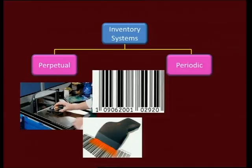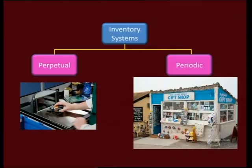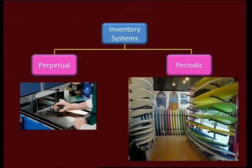The opposite is the periodic system. Think of someone selling mangoes — he doesn't have a scanner. He knows his stock because he can count it: what he started with, plus what he purchased, minus what's left over equals what he sold. It's more informal, often for a business where the owner runs it and knows exactly what's going on. Another example would be a gift shop or a surf shop where it's relatively easy to count the product.